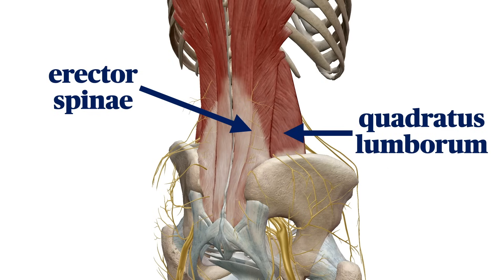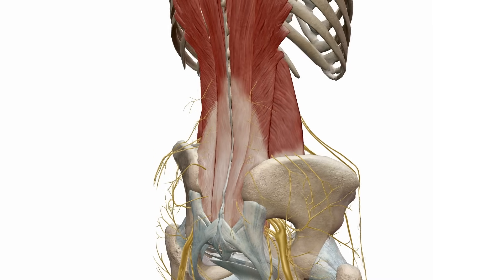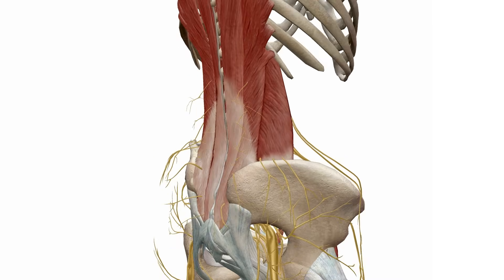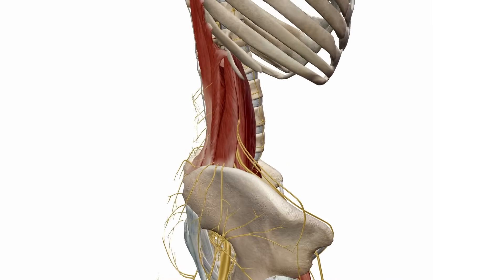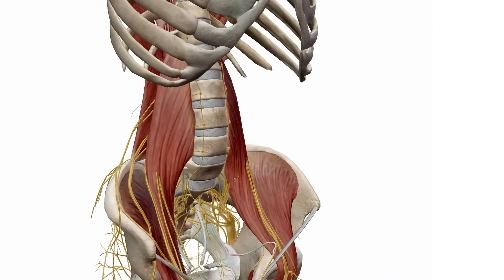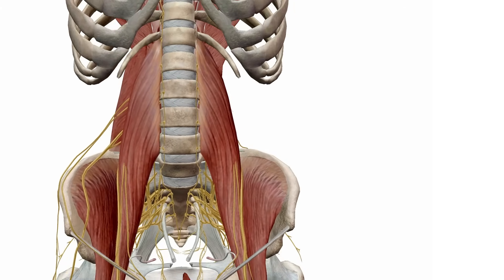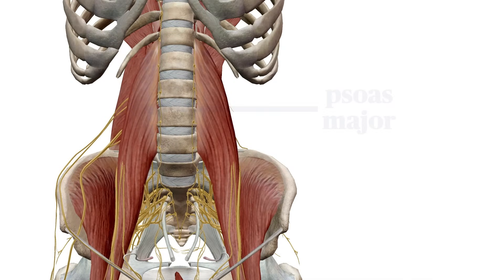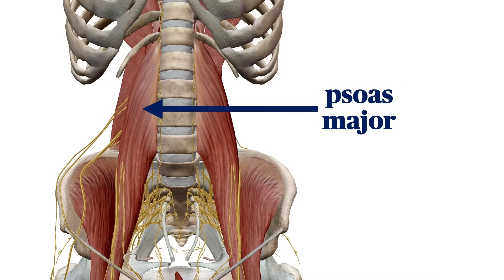The quadratus lumborum muscle stretches from the iliac crest to the 12th rib with medial attachments to the lumbar transverse processes. It lies anterior to the erector spinae muscle and posterior to the psoas major muscle. The ventral rami of the lower thoracic nerves run along its anterior surface, and local anesthetic placed here in the potential space between psoas and QL will anesthetize those nerves supplying the abdominal wall.